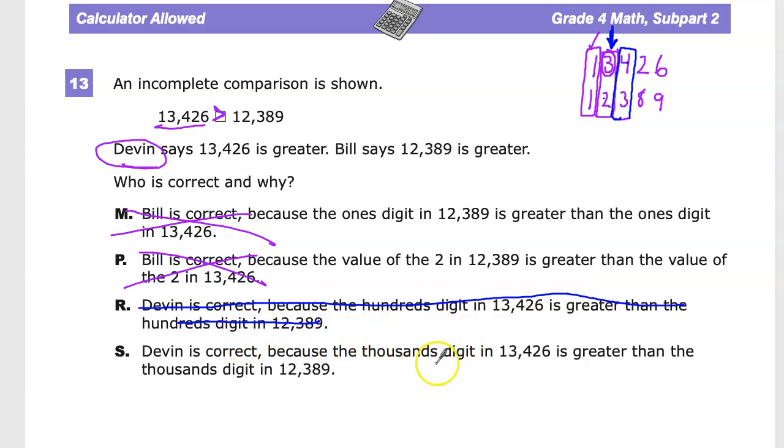Devin is correct, because the thousands digit, which is the three, is greater than the thousands digit in here, the 12,000, because the two is smaller than the three. So this is the correct answer.